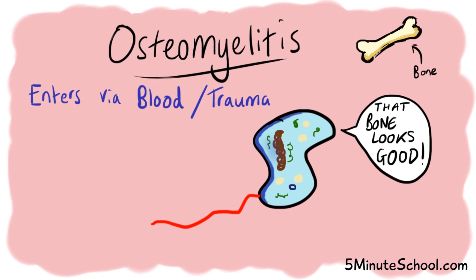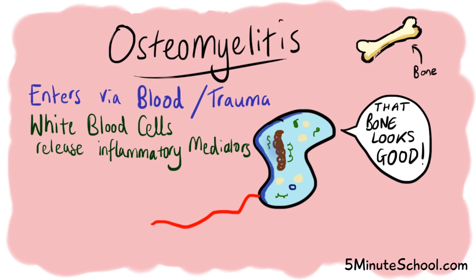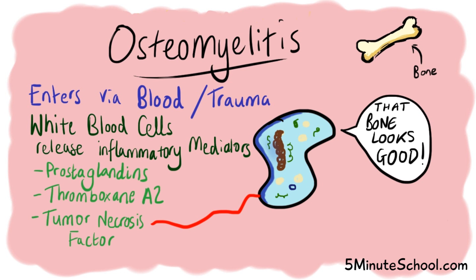In acute suppurative osteomyelitis, the bacteria enter through the metaphysis of the bone. Once the bone is infected, white blood cells enter and try to engulf the bacteria, releasing inflammatory mediators and enzymes. These cause breakdown and lysis of the bone. Some of these inflammatory mediators include prostaglandin, thromboxane A2, and tumor necrosis factor.